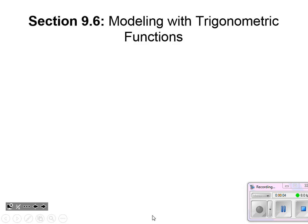Welcome to Algebra 2. We've got our final section of notes in this class: modeling with trigonometric functions. If you think about how these functions have looked when we graphed them in the latter part of this chapter, sine and cosine are values that rose and fell repeatedly. They oscillate — that's a really good word to use — and that type of repetition happens all the time in the real world.